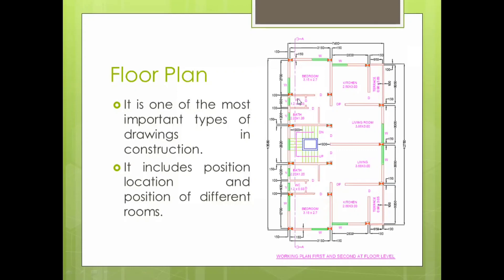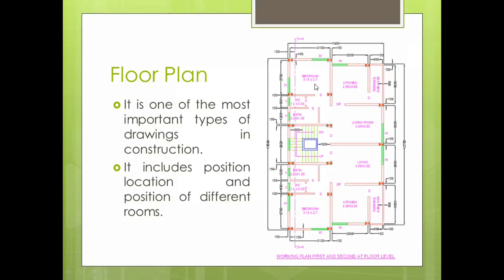For example, the water closet size is 1.2 by 0.93. So 1.2 is from one end to the other horizontally, and 0.93 is from top to bottom. Usually the first dimension represents the horizontal size of the room and the second represents the vertical size. If the unit is not mentioned, it could also be in feet and inches, but whenever different unit dimensions are used, they should be mentioned clearly.